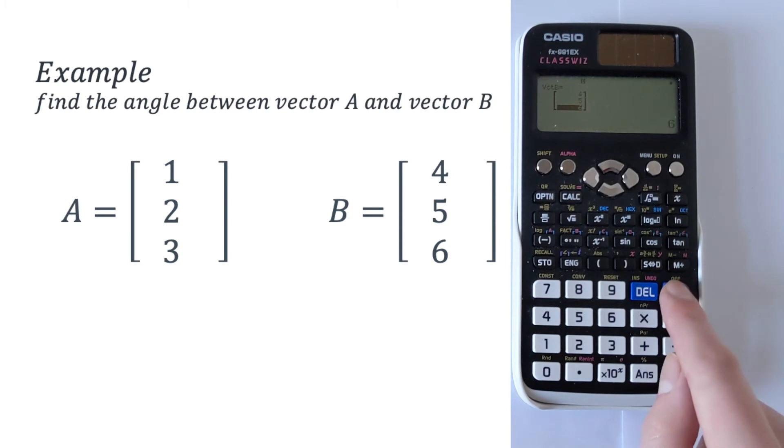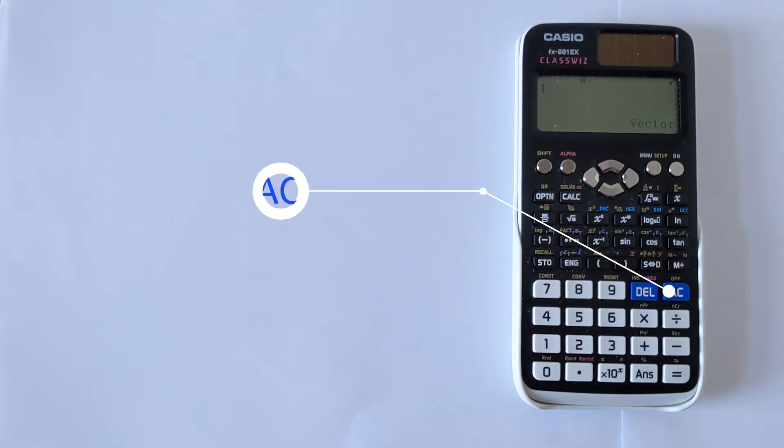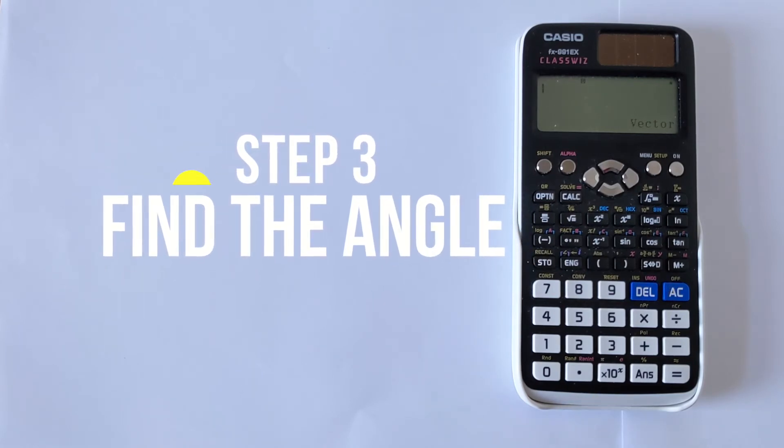Then like before, we press the AC button. We've now got vector A and vector B in the calculator's memory. We need to recall those and use the angle function.